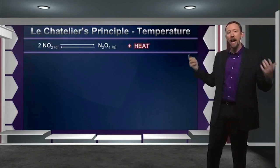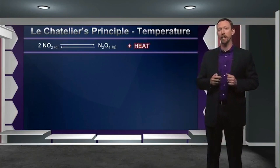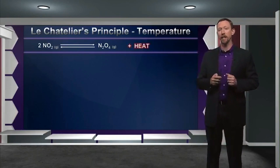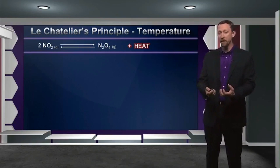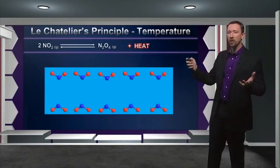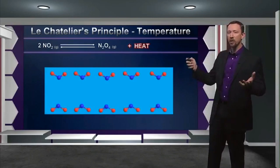What happens when you increase or decrease the concentration of a product? You shift the equilibrium. But this time, it's not a physical product — instead, it's heat that we're thinking about. So, if I have a system like this one with NO2, the system can fight any temperature changes I try to make by pushing the equilibrium one way or the other.